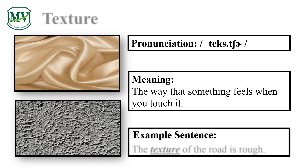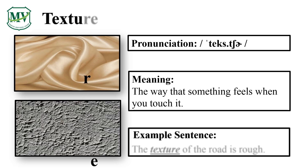Let's spell the next word: T, E, X, T, U, R, E. Texture. The texture of the road is rough.